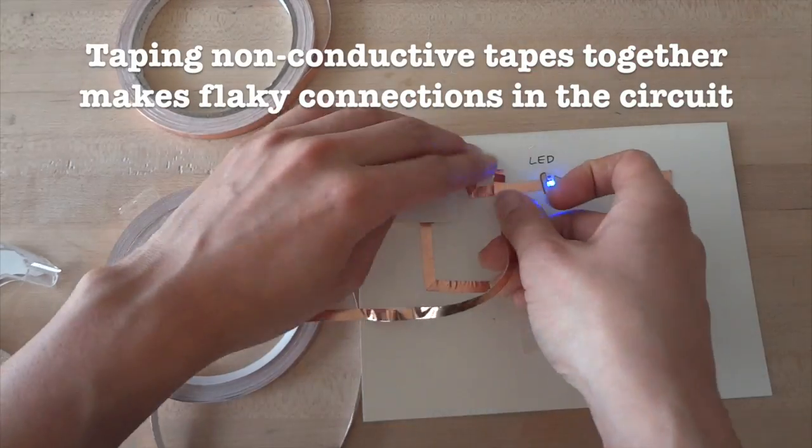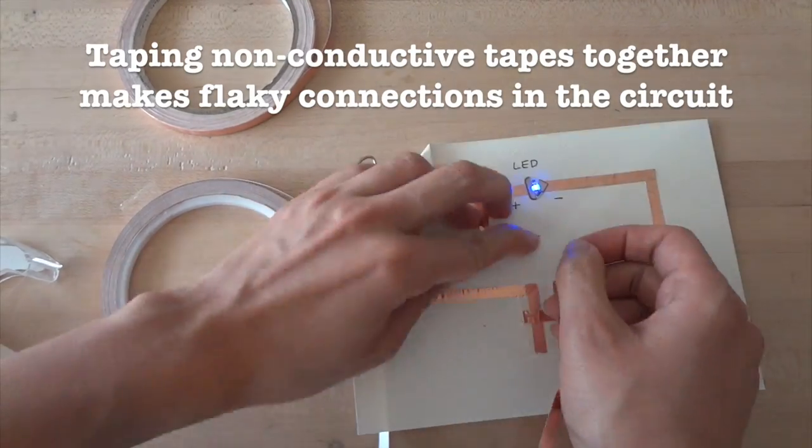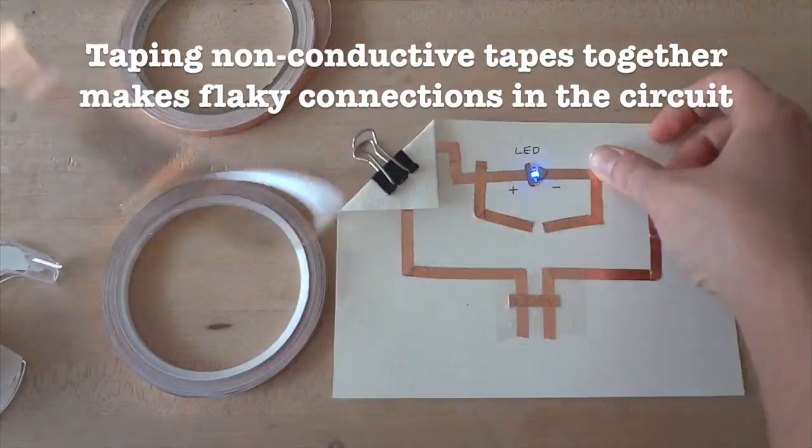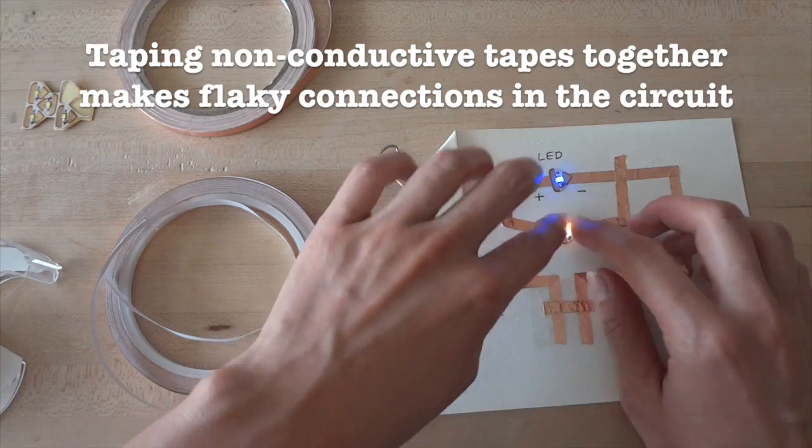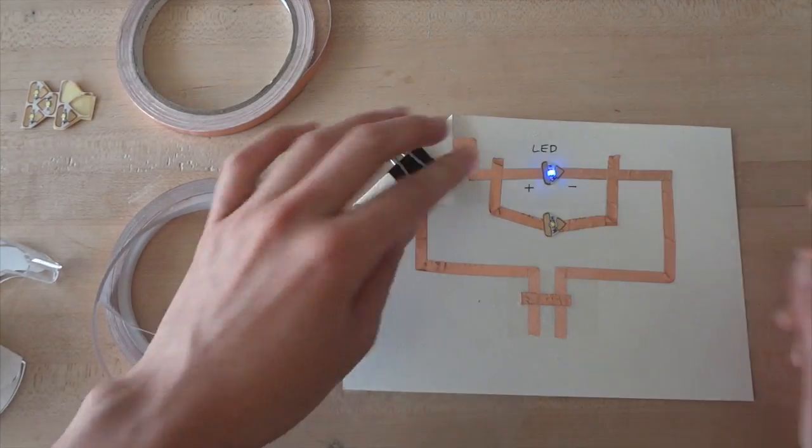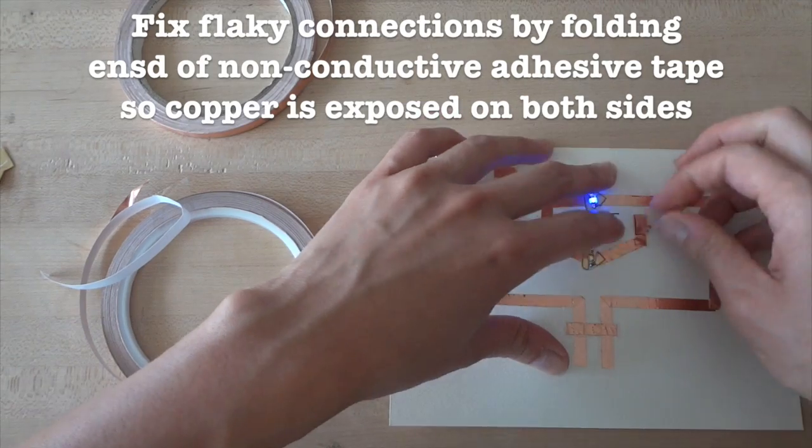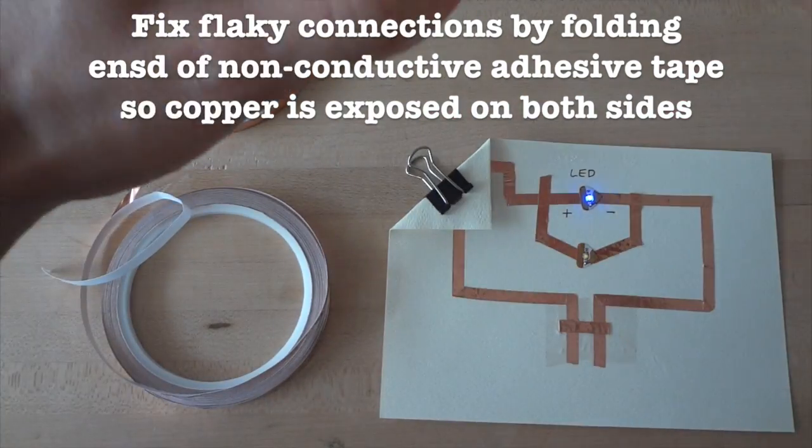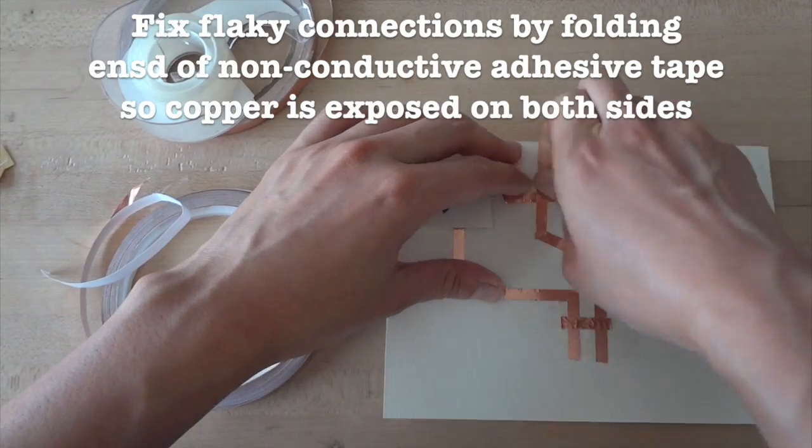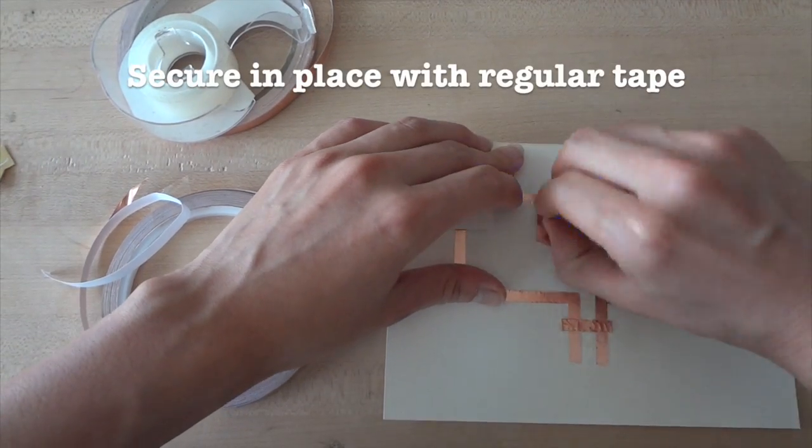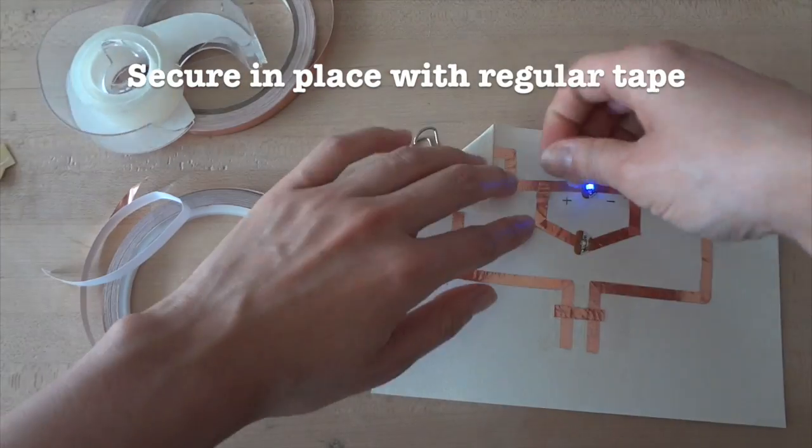Likewise, if you want to extend your circuit using non-conductive adhesive tape, just sticking the tapes together will create flaky connections. As a result, your circuit may flicker or not turn on at all. To fix this, at every junction between different pieces of copper tape, you'll need to fold back the ends so that there is exposed copper on both sides. And then, tape the connection back down with regular tape to secure it.